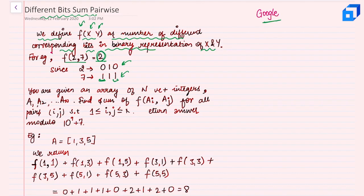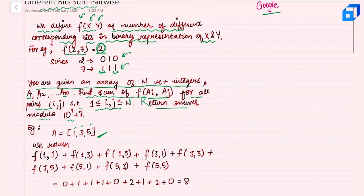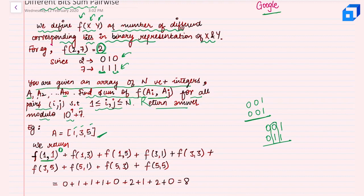You are given an array of n positive integers a1 through an. You have to find the sum of f(ai, aj) for all pairs i and j such that i and j lie between 1 to n, and return the answer modulo 10^9 + 7. For example, given the array [1, 3, 7], you compute f(1,1) which gives 0, and f(1,3) which gives 1.